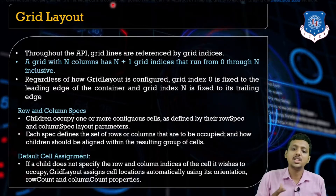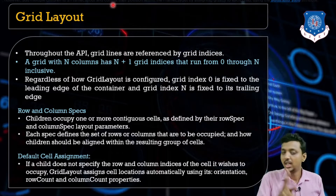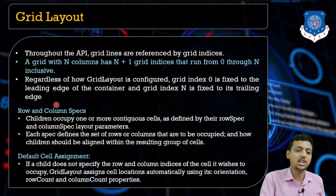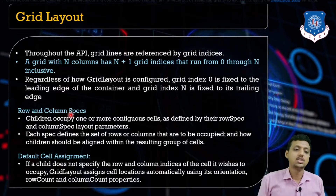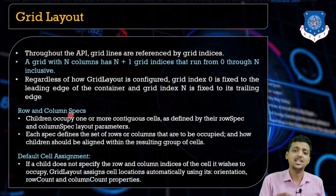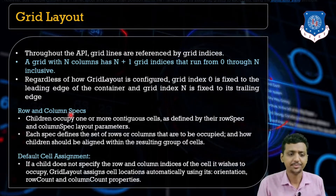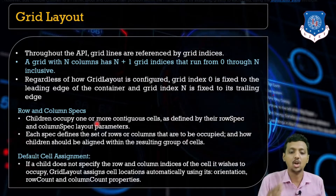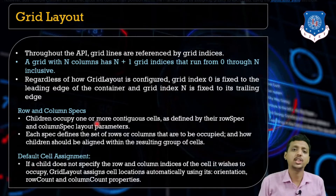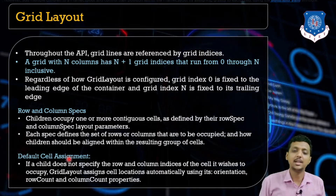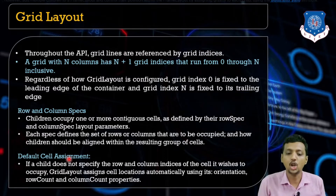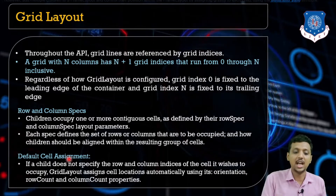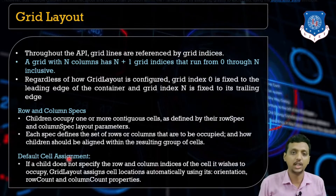The Grid Layout is configured and starts with grid item index zero. Two things to understand: number one is row and column specifications. Children, meaning grid items, occupy one or more configuration cells as defined by their row specification and column specification. Each specification defines the set of rows and columns to be occupied by a particular grid item. By default, if a child does not specify any row or column indices, the cell location is automatically arranged by the grid.